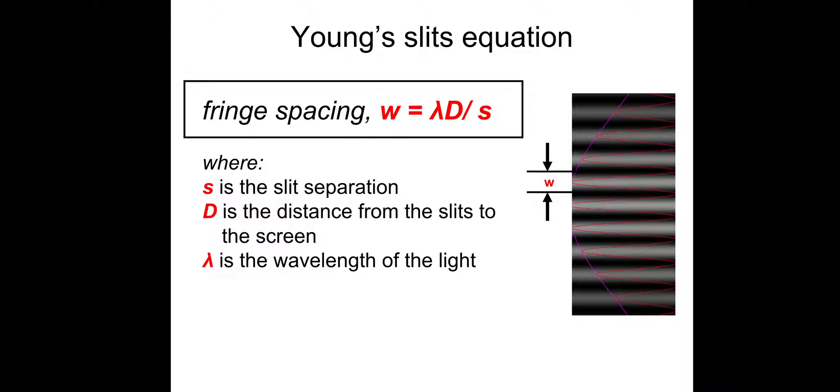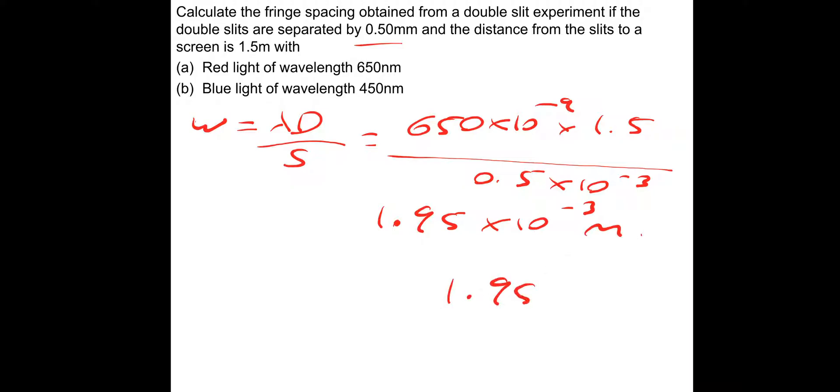Let's utilize this equation. Calculate the fringe spacing obtained from a double slit experiment if the double slits are separated by 0.5 mm and the distance from the slits to the screen is 1.5 m. First, we're going to use red light of wavelength 650 nm. So the fringe spacing W equals λD/S. The wavelength is 650 nm times 10^-9, multiplied by the distance to the screen, 1.5 m, divided by S, the separation of the slits, 0.5 times 10^-3. That gives us 1.95 × 10^-3 meters or 1.95 mm.